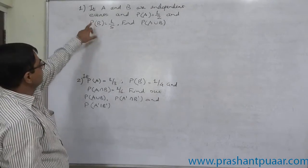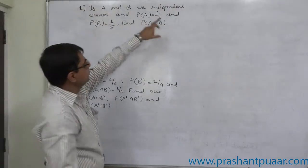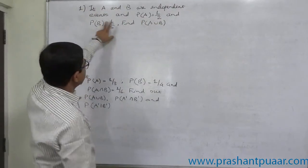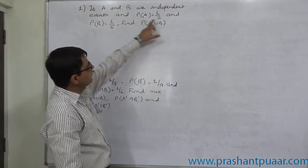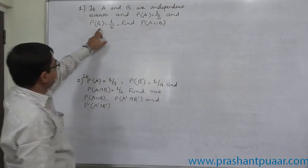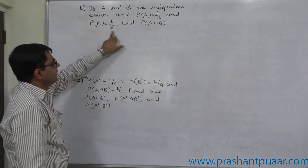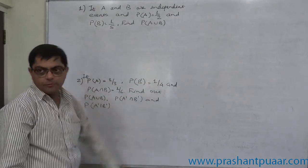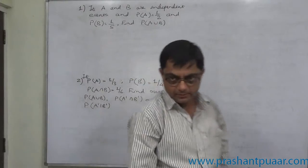The first case is: if A and B are two independent events and P(A) equals 1/2 and P(B) equals 1/5, find out P(A∪B).